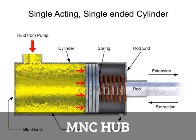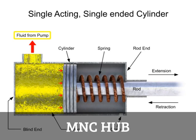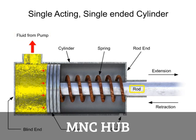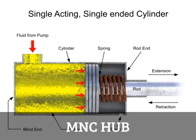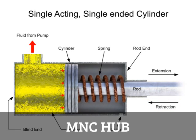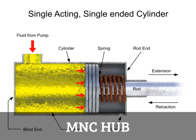When a control valve directs fluid out of the port, the fluid pressure is removed. The force of the spring pushes against the piston in the other direction, and the rod returns to the cylinder. This is called the retraction stroke. Single-acting cylinders are most often found in reciprocating engines, pumps, and hydraulic rams.